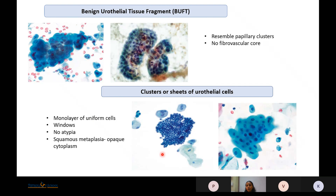Clusters or sheets of urothelial cells resemble true tissue fragments but, if we look closely, they are monolayer sheets with presence of windows — this distinguishes them from true tissue fragments. There is no atypia and no nuclear hyperchromasia. Cytoplasm may appear opaque due to squamous metaplasia, but the nuclei are benign-looking, so these are placed in the Negative for High-Grade Urothelial Carcinoma category.